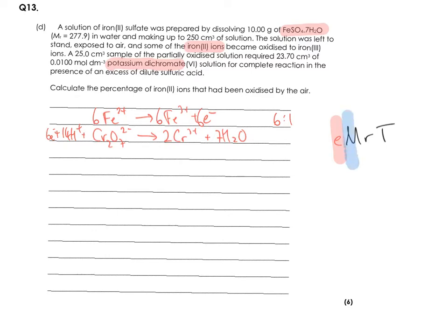Our next step is to work out moles. So what can we work our number of moles off? We've got a volume and we've got a concentration of potassium dichromate. So moles of the dichromate ion, Cr2O7 2 minus will equal 23.7 times 0.01 over 1000 which gives us 2.37 times 10 to the minus 4.